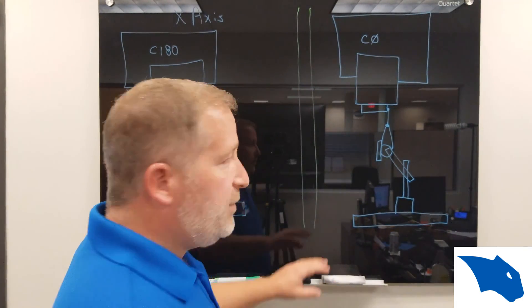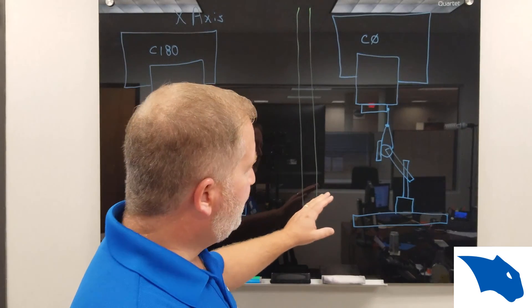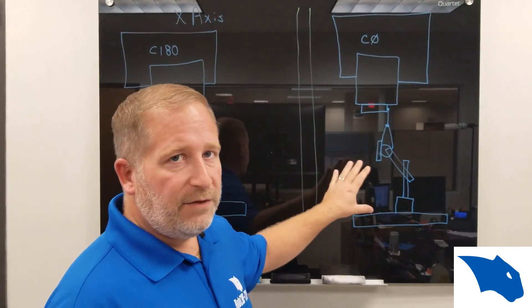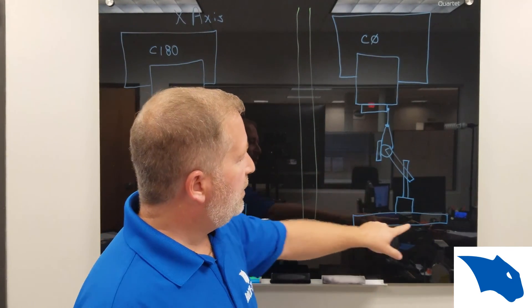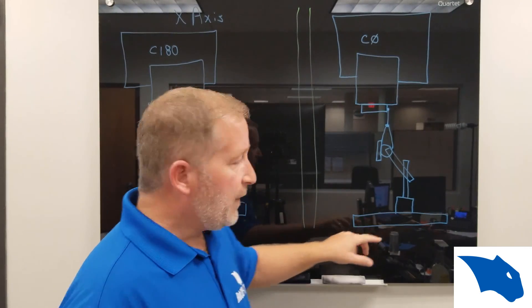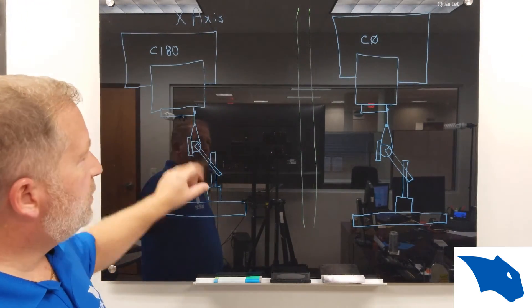So I've gone ahead and made two drawings on the board behind me here. What you're going to want to do, this is again, the front view of the machine. This is our table in both views. Both of these are looking at the front.